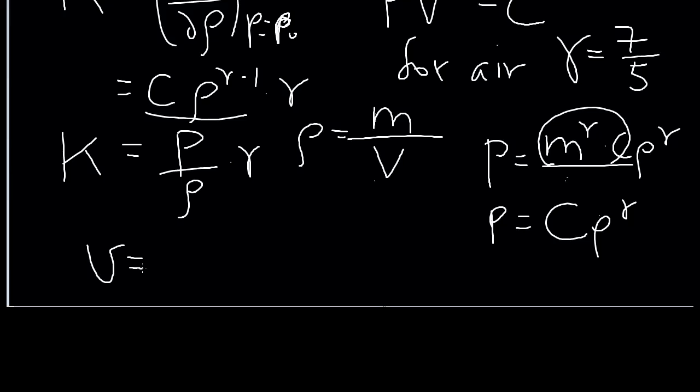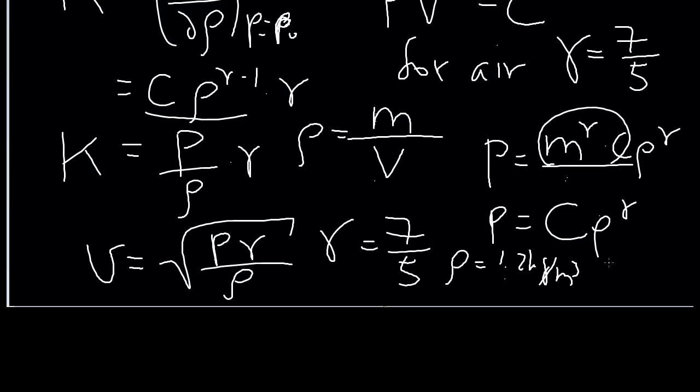...the phase velocity is given by the square root of the air pressure times the 7/5 constant divided by the density of air. If you plug numbers in, your typical density is 1.2 kilograms per meter cubed, and your pressure is of course 1.01 times 10^5 pascal, giving you a v of 343 meters per second, which is very close to the experimental value.